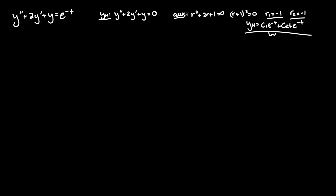This gives us our homogeneous solution: c₁e^(-t) + c₂te^(-t). We need these two terms to find our particular solution, where we call y₁ = e^(-t) and y₂ = te^(-t). Since y_particular = v₁y₁ + v₂y₂, we will be using the Wronskian approach.